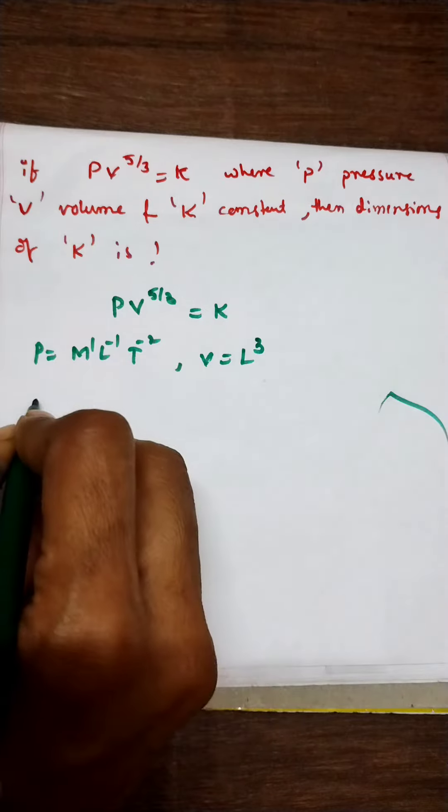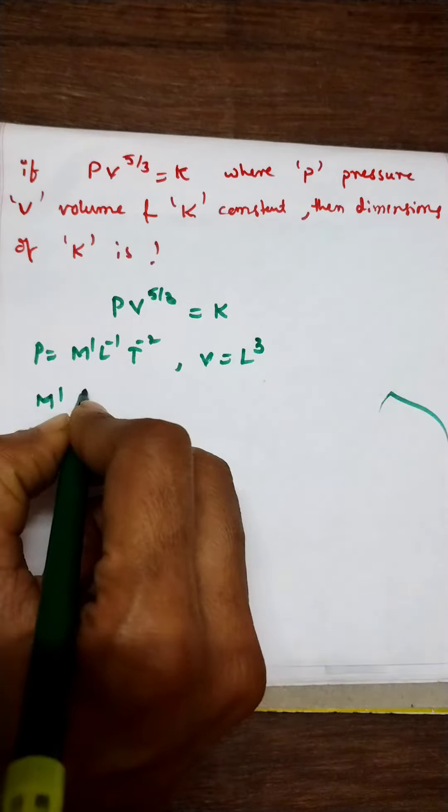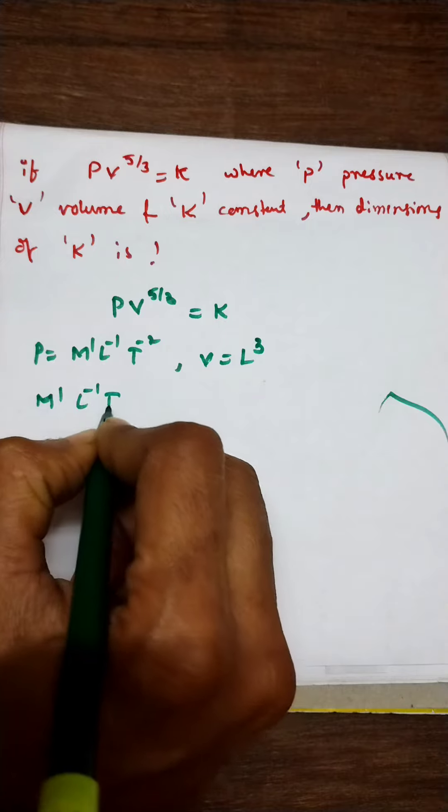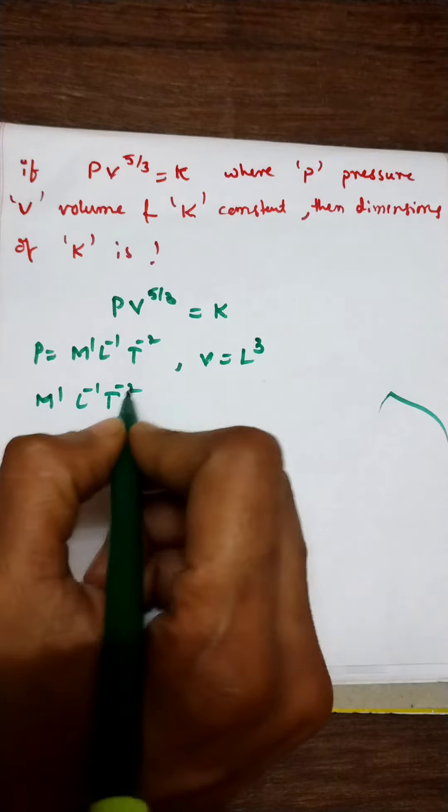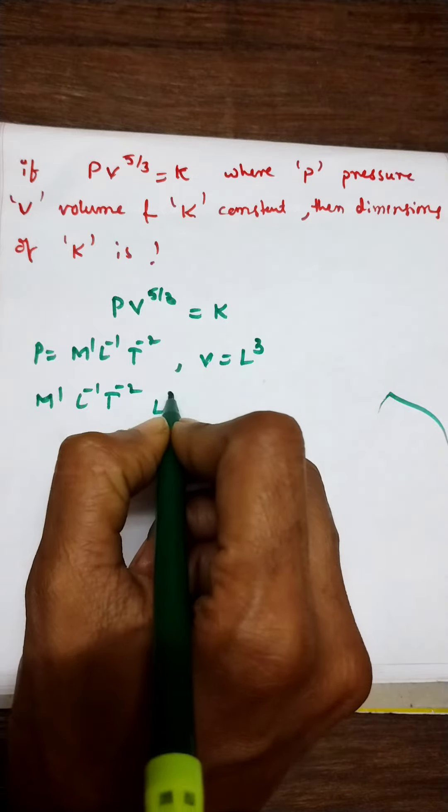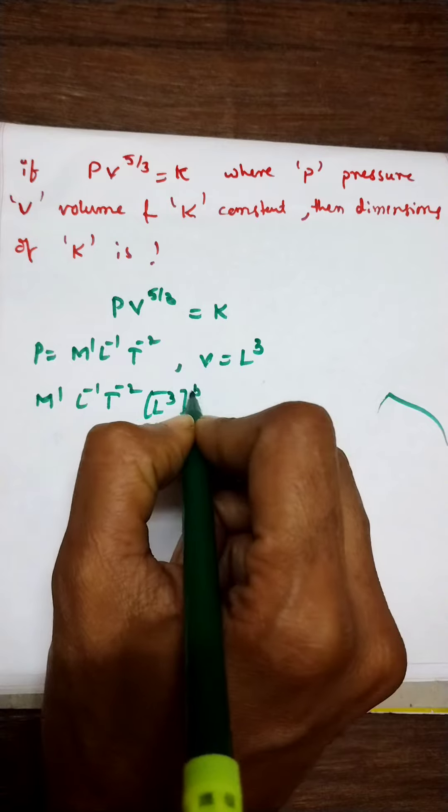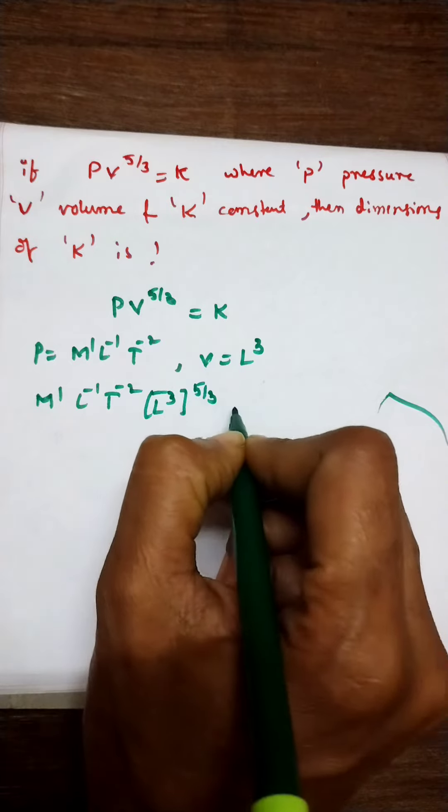So these values you can substitute in the above equation, that is M power 1, L power minus 1, T power minus 2 into L cube whole power 5 by 3. That equals K.